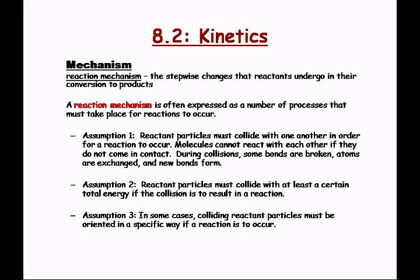What we've been showing so far is just: this is what happened at the beginning, this is what happened at the end. That's not very interesting. So let's talk about what happened in the middle. A could go to intermediate one, intermediate one could go to intermediate two, intermediate two could go to intermediate three, and so on until we get to B. If we just took two snapshots, we wouldn't know anything about intermediates one, two, and three. So the stepwise changes that the reactants undergo on their way to conversion to products — a reaction mechanism is often expressed as a number of processes that must take place.